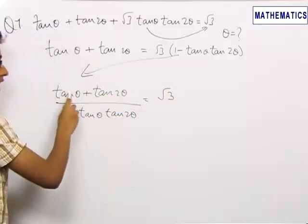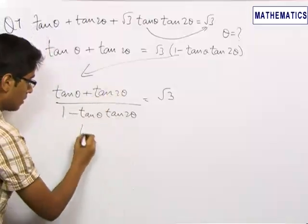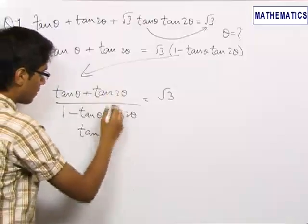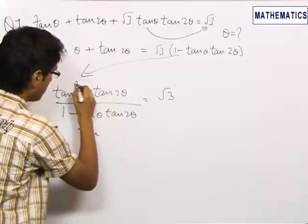Now, this is the formula of tan a plus tan b upon 1 minus tan a tan b, and this is equal to tan of a plus b. This is a, this is b.